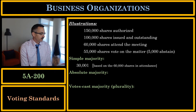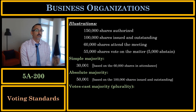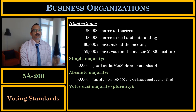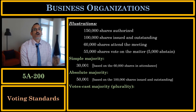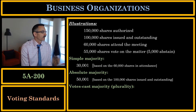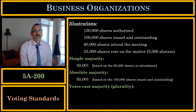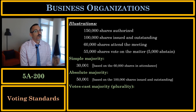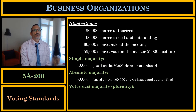An absolute majority is based on the total number of shares issued and outstanding. With 100,000 shares issued and outstanding, an absolute majority requires 50,001 shares voted in favor to pass the proposal — a majority of all shares entitled to vote, regardless of how many attended the meeting.